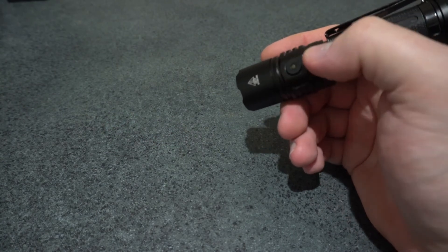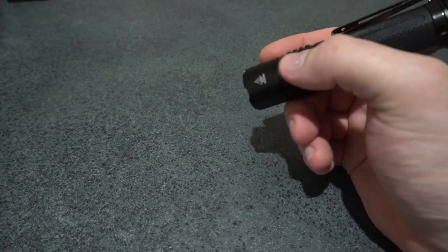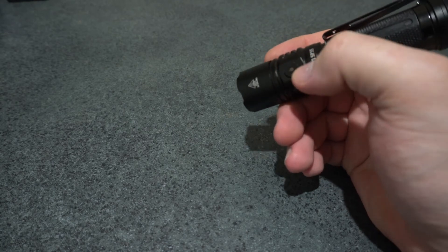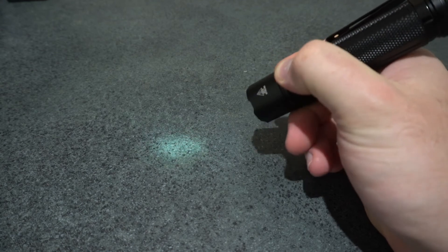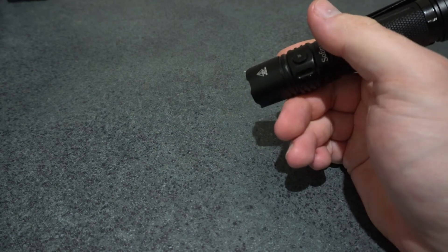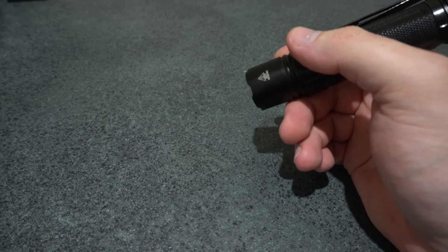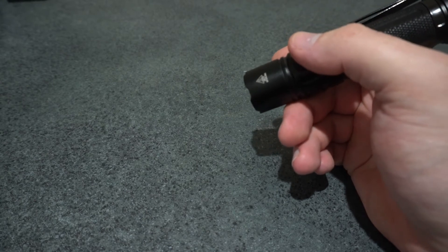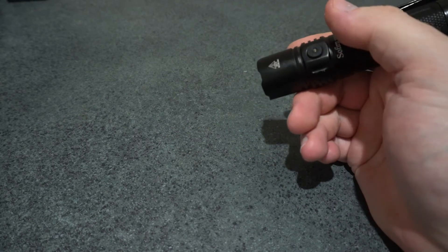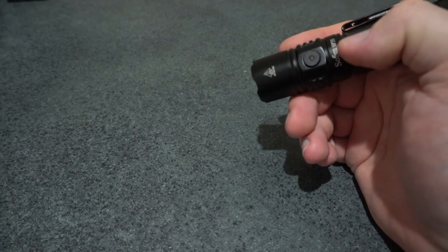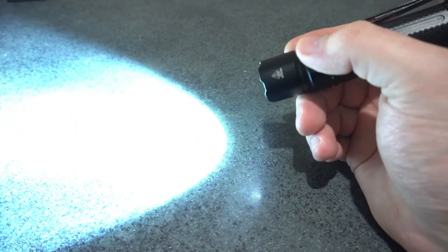So, lockout mode is four clicks from off. If you hold the switch in lockout, you've got your moonlight. So that's great. So you don't have to, you just want a quick little bit of light, you don't want to have to unlock it then lock it again. So you've got just a bit of light to be able to use. So to exit out of, to unlock the light, you'll have four clicks. And then there you go.